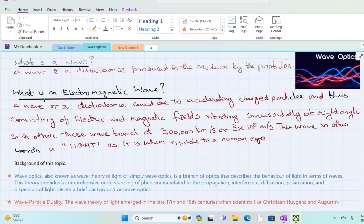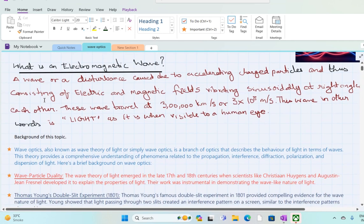But here we have used the word wave optics. What is an electromagnetic wave? So optics is light. In general, if you are not aware of electromagnetic waves, here we have come what is an electromagnetic wave. A wave or a disturbance caused due to accelerating charged particles, and thus consisting of electric and magnetic fields vibrating sinusoidally at right angles to each other. These waves travel at 3 lakh km per second or 3 into 10 raised to 8 meter per second. This wave, in other words, is also known as light when visible to a human eye.